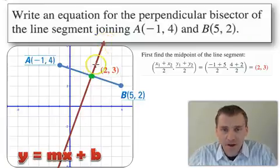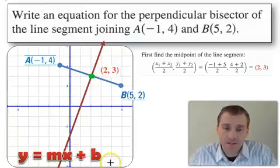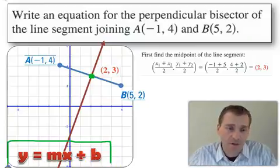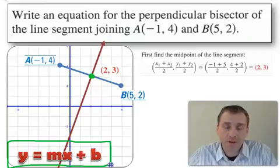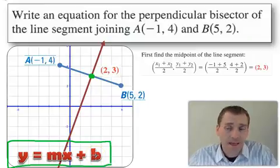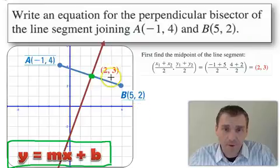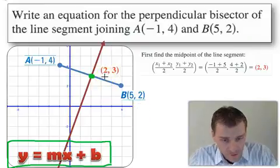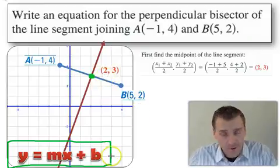And, this line right there is the perpendicular bisector. Now, this point we already found. That point is two, three. So, that's the midpoint. So, I just drew this line right through here. But, as you can see, what I'm looking for, guys, is this. I'm looking for the equation of this particular line. So, I need slope and I need y-intercept.